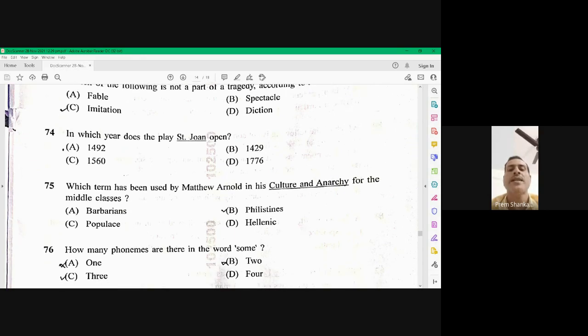How many phonemes are there in the word some? So if you look at the dictionary, you will find sir, a and ma. There are three phonemes. Sam is made of three phonemes, sir, a and ma. So the right option is three. Three phonemes are there.